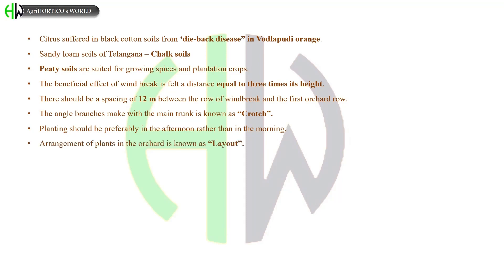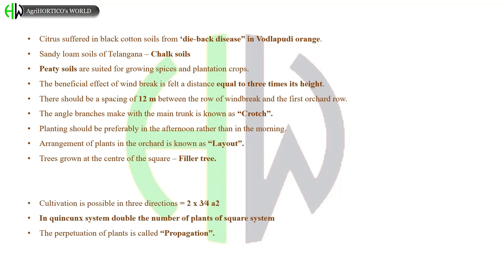Arrangement of plants in the orchard is known as layout. Tree grown at the center of the square is called filler tree. Hexagonal or septual system is based on equilateral triangles. This system accommodates about 15% more plants per unit area than the square system. Here cultivation is possible in three directions. In quincunx system, double the number of plants are accommodated when compared to the square system.